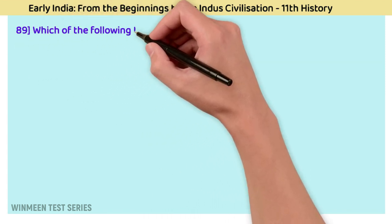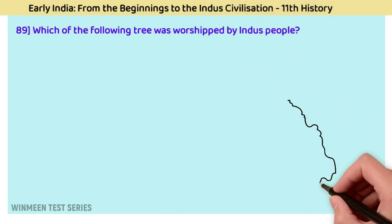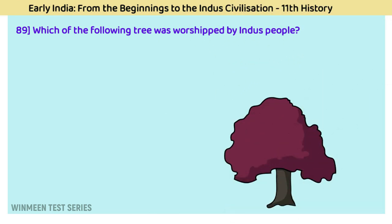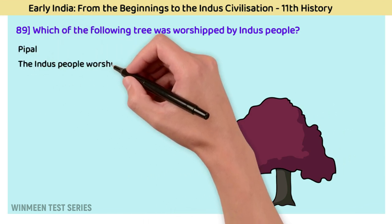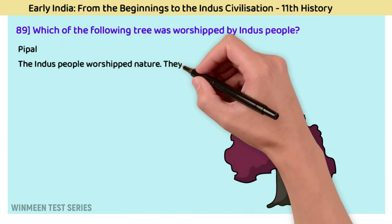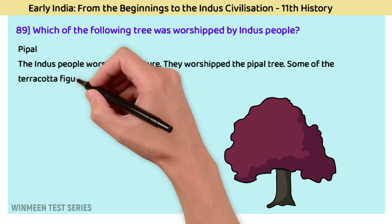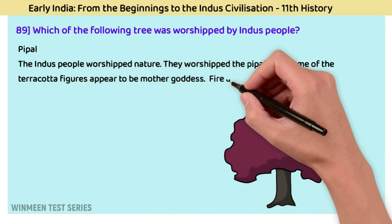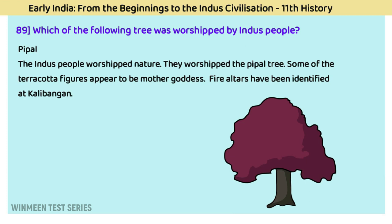Question 89: Which tree was worshipped by Indus people? The answer is the pipal tree. The Indus people worshipped nature. They worshipped the pipal tree, and some terracotta figures appear to be mother goddesses. Fire altars have been identified at Kalibangan.